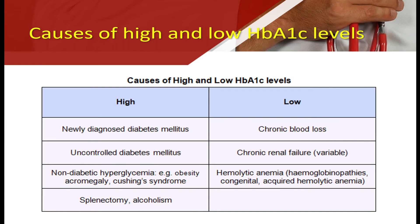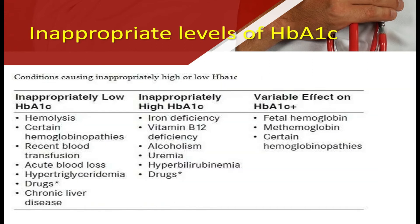There are different causes for high and low HbA1c levels. High HbA1c levels include newly diagnosed diabetes, uncontrolled diabetes, non-diabetic hyperglycemia — particularly obesity, acromegaly and Cushing syndrome — post-splenectomy, and alcoholic patients. Causes for low HbA1c levels include chronic blood loss, chronic renal failure, and hemolytic anemia. Apart from these causes, there may also be inappropriate levels of HbA1c.